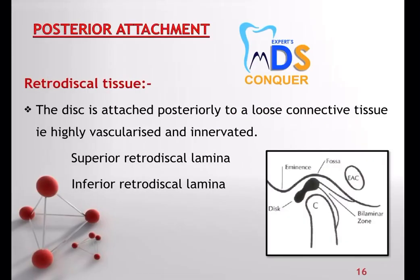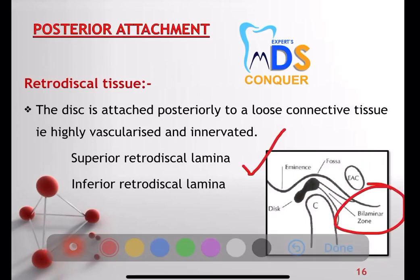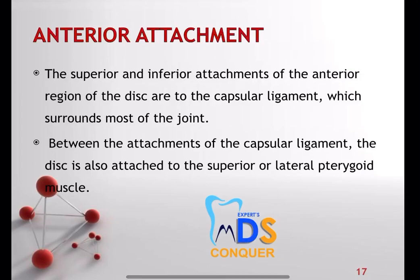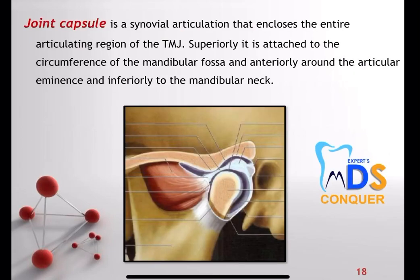Coming to the attachments of the disc: posteriorly it is attached via retrodiscal tissue, which is highly vascularized and innervated, and also called the bilaminar zone because it has a superior retrodiscal lamina and an inferior retrodiscal lamina. Anteriorly, the superior and inferior attachments of the anterior region of the disc are to the capsular ligament, which surrounds most of the joint; between these attachments the disc is also attached to the lateral pterygoid muscle. The posterior as well as the anterior attachments are very important.